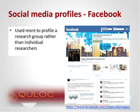Another social media profile tends to be used more by research groups rather than individual researchers, and that's Facebook. In this example, the research group Urban Informatics created a Facebook page for their group and use it to communicate with the community, because their research involves a lot of community engagement. They find the benefit of Facebook is that it's a platform community members are familiar with, rather than some of the more scholarly platforms.